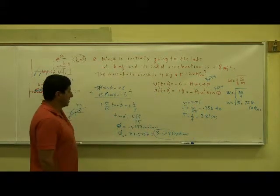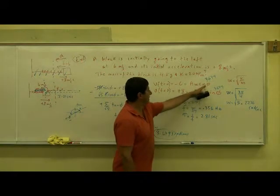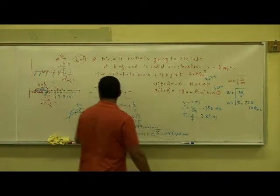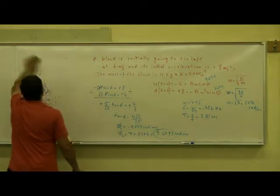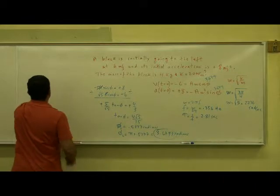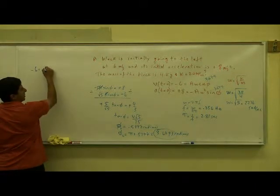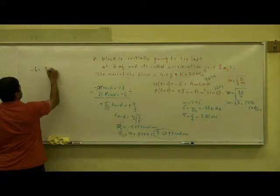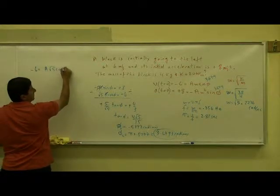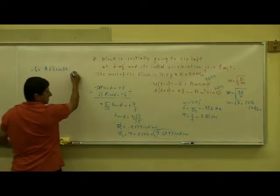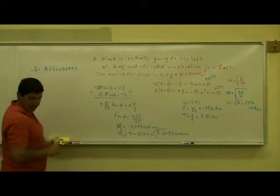Once I have my phase angle, then I put it into this equation, and then I find my amplitude A. So we have negative 6 is equal to A times square root of 5 times cosine of 3.6793. Then you find the amplitude that way.